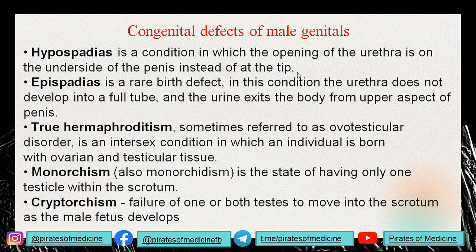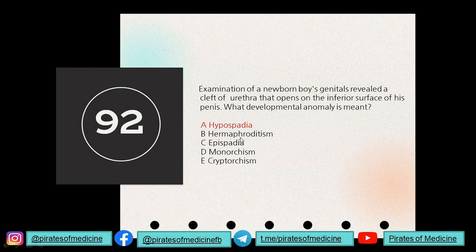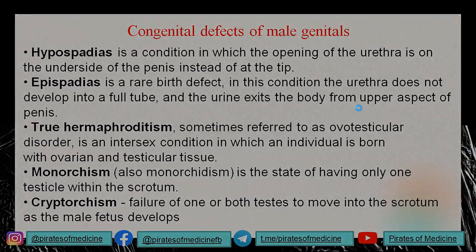We also have true hermaphroditism — an ovotesticular disorder in which an individual is born with both ovarian and testicular tissue. Monorchism is a defect in which the male has only one testicle within the scrotum, and cryptorchism is the failure of the testes to descend into the scrotum from the abdomen. The answer here is hypospadias, because the urethra opens on the inferior surface.